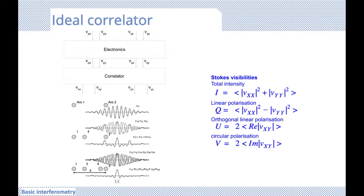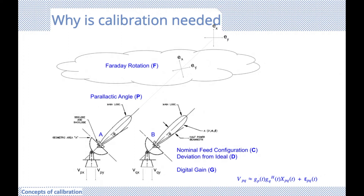Now that we have the signal, why the need for calibration? In the path between the source and our correlator, a number of intentional and spurious transformations occur, which means the signal we measure — our V value — is distorted. It is distorted through the interstellar medium, then through the atmosphere, and then through our electronics themselves. Our instrument has effects on the signal, all of which corrupt the signal of our target of interest.